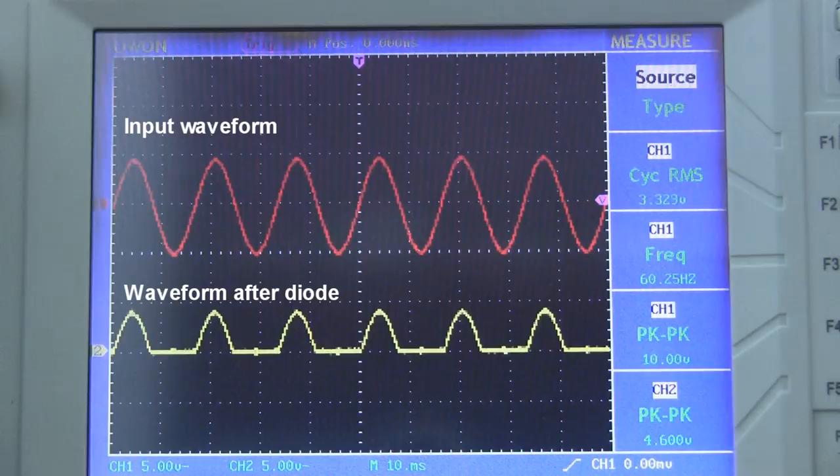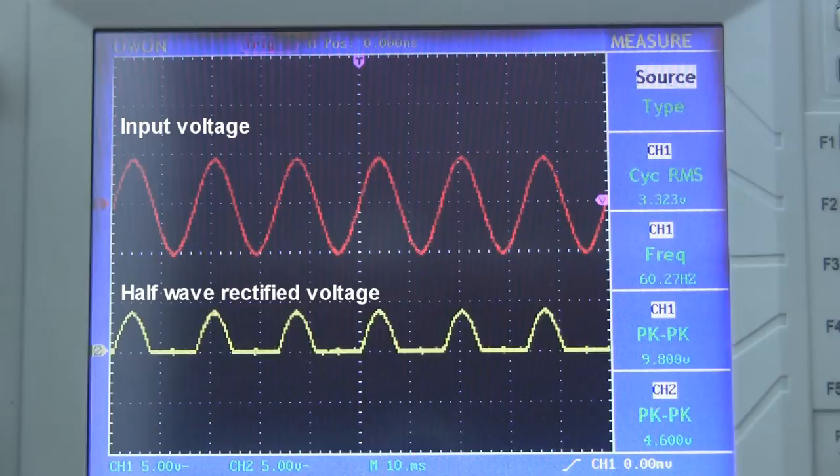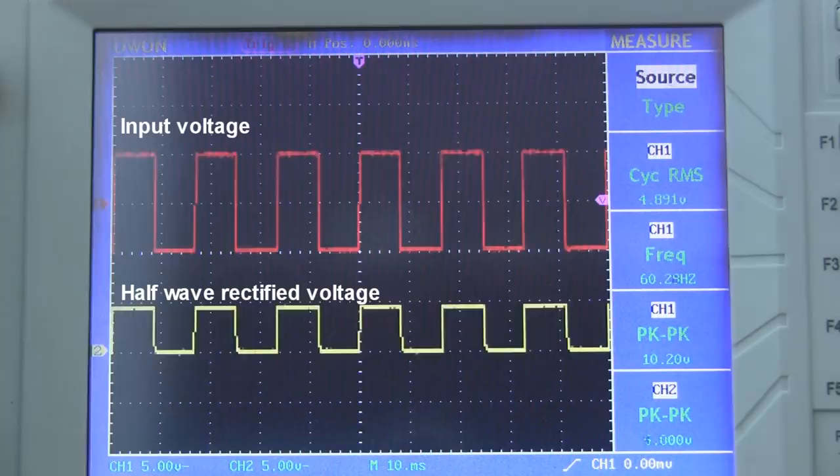So if you feed an AC voltage or current through a diode, the negative voltage will just get blocked off, and you'll be left with only the positive half of the waveform. This process is called half-wave rectification, and it doesn't have to be with just a sine wave. It'll also work with square waves, triangle waves, or any other waveform that dips into the negatives.